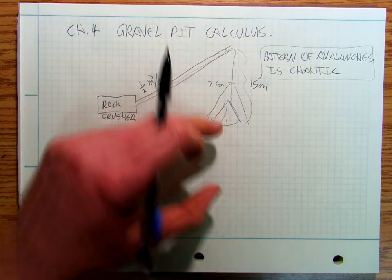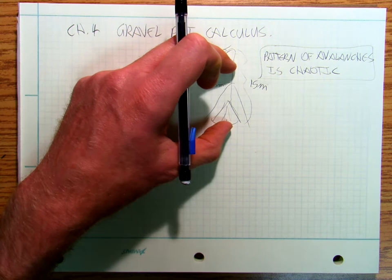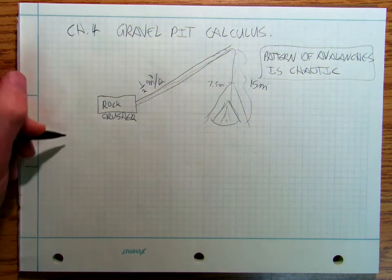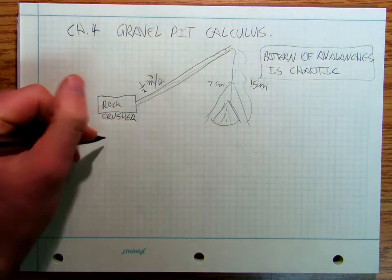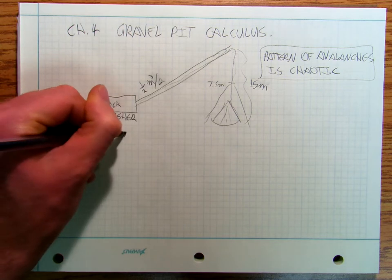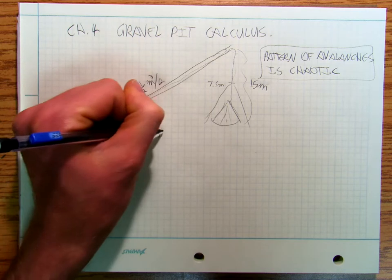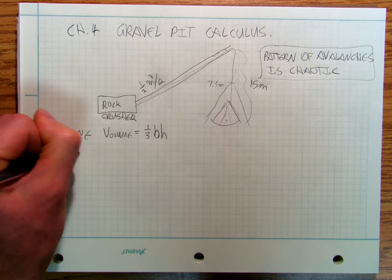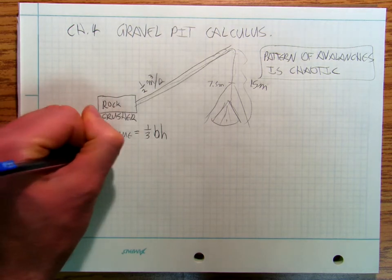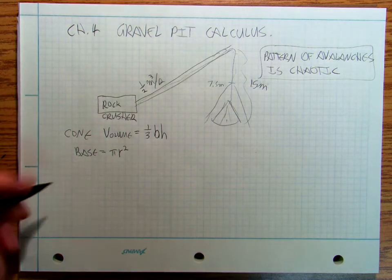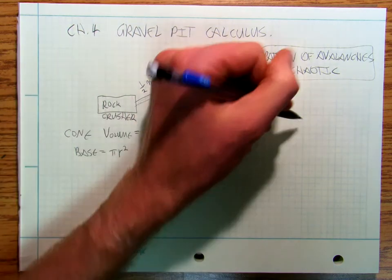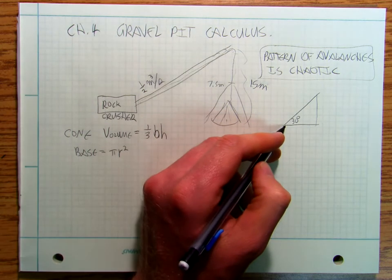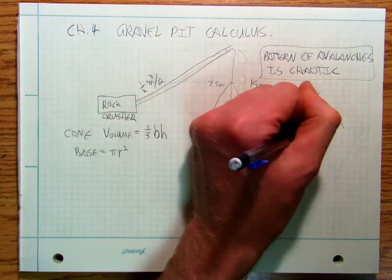Because as the rock pile grows up, it also grows side to side. And so the rock pile makes a cone and the volume of the cone is going to be one-third base times height. And my base is going to be pi r squared.